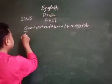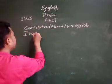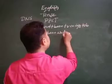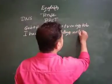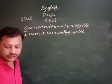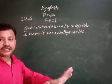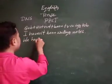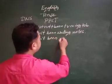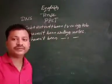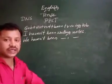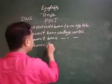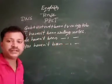As per the structure, the first subject is 'I', helping word is 'have'. Have plus not gives 'haven't'. So: I haven't been writing notes. Next: We haven't been writing notes. Next: You haven't been writing notes. You haven't been writing notes.